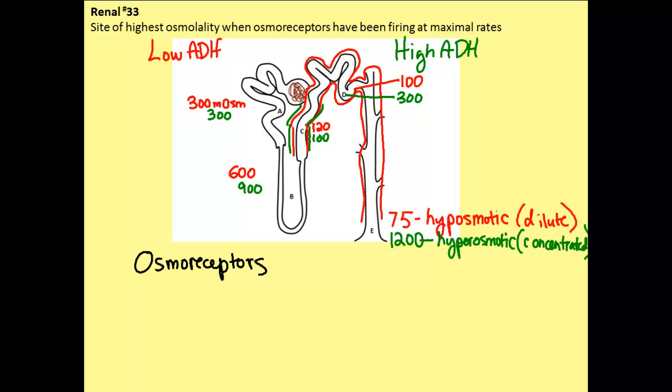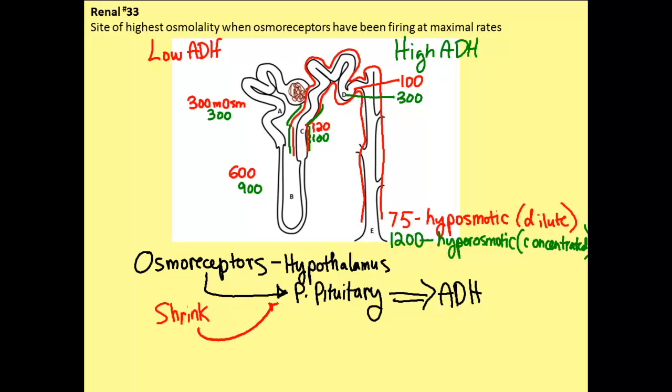You will recall from lectures that osmoreceptors are located in the hypothalamus, and they are going to send signals to the posterior pituitary to control the release of the hormone in question, which is antidiuretic hormone. So, if the osmoreceptor shrinks due to a high extracellular fluid concentration, we will see an increase in the action potentials that are sent to the posterior pituitary. So, that will increase our release of ADH.